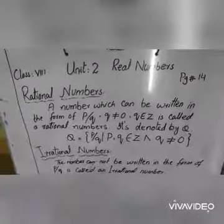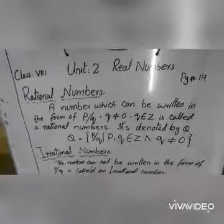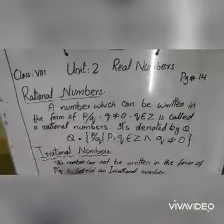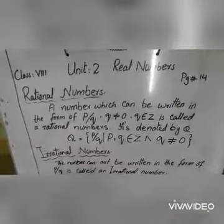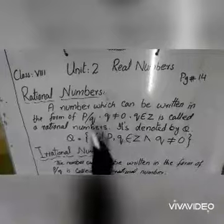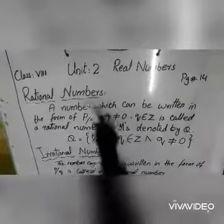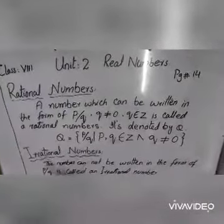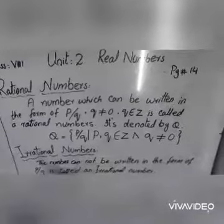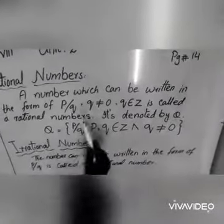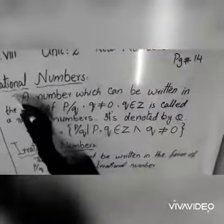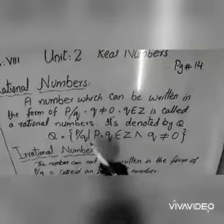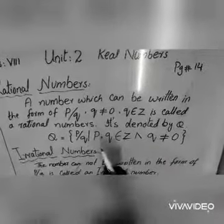The numbers made up of all rational and irrational numbers are called real numbers. Rational aur irrational numbers ko mila kar jo numbers bante hain, unhe real numbers kaha jata hai. Yeh humara main topic hai. Rational numbers ko mila kar jab numbers likhi jati hain toh woh real numbers kehlate hain.